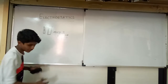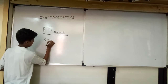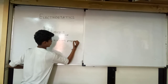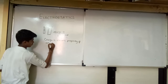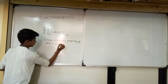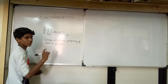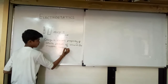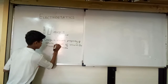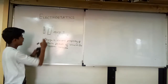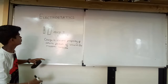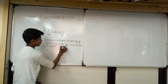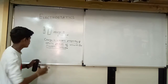By this, we can define that charge is the electric property of the atomic particles of which the matter consists. Charge is produced between the atomic particles because the electrons of the glass rod interconnect with the electrons of the silk rod after rubbing.